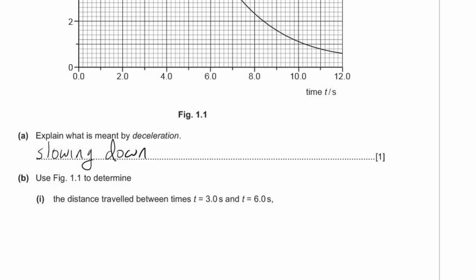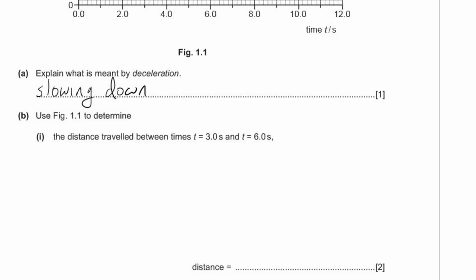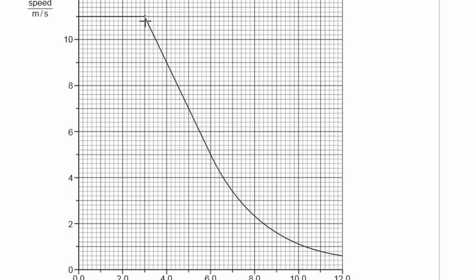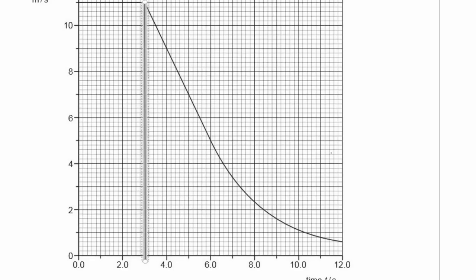Part B asks us to use figure 1.1 to determine the distance traveled between t equals three seconds and t equals six seconds. That's two marks. We have a speed-time graph, and the distance traveled is given by the area under the graph. We're looking for the area between three seconds and six seconds — that's given by two areas: area A and area B.